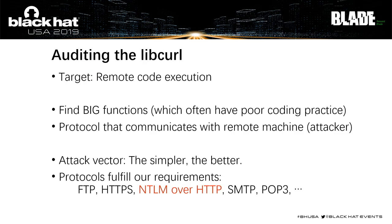Since our target is remote code execution, and libcurl is widely used with code reviewed quickly, here are two guidelines for finding problems by reading the code quickly. First, find big functions — functions with many lines are hard to test and contain many attack surfaces. Second, look for protocol functions that communicate with remote machines. Most functions in libcurl are related to remote interactions. After carefully sifting through protocols, we confirmed that NTLM over HTTP was what we wanted to test.